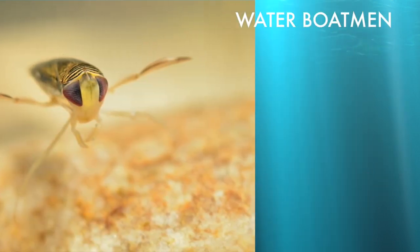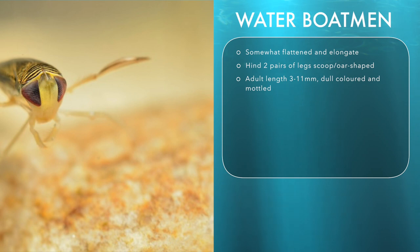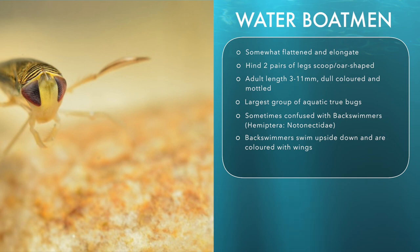Water boatmen are somewhat flattened and elongated in shape. They have the hind two pairs of legs fitted with hairs, and the tarsi of the hind legs is scooped or oar-shaped, which allows them to swim. Adults range in length from 3 to 11 millimetres and are usually dull coloured and often mottled. Water boatmen are the largest group of aquatic true bugs. They are sometimes confused with back swimmers (Hemiptera: Notonectidae) because they have the same general shape. However, back swimmers swim upside down in the water and are coloured with the wings lighter than the leg area. Adults are relatively small and soft-bodied.